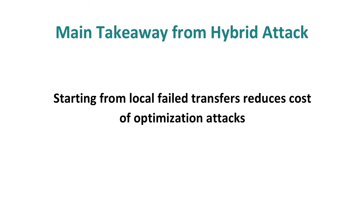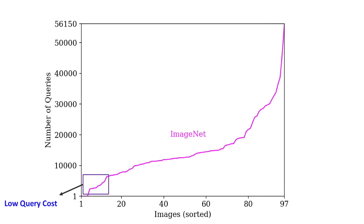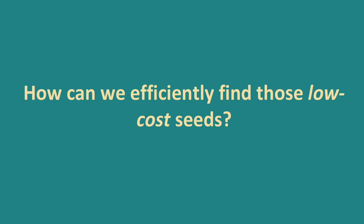The main takeaway from the hybrid attack is that local failed transfers can help to reduce the cost of optimization attacks. But so far we're still talking about reducing the average cost. Recall that attack costs of different images vary significantly, and there are some low cost images where the attacks can be very efficient. The question is: how can we find those low cost images?